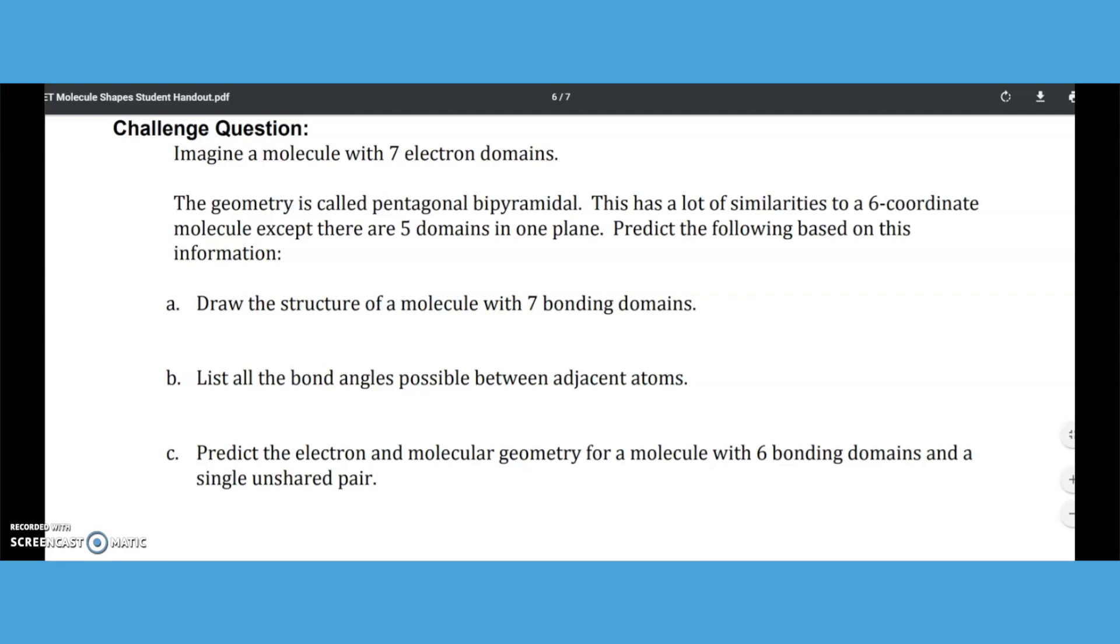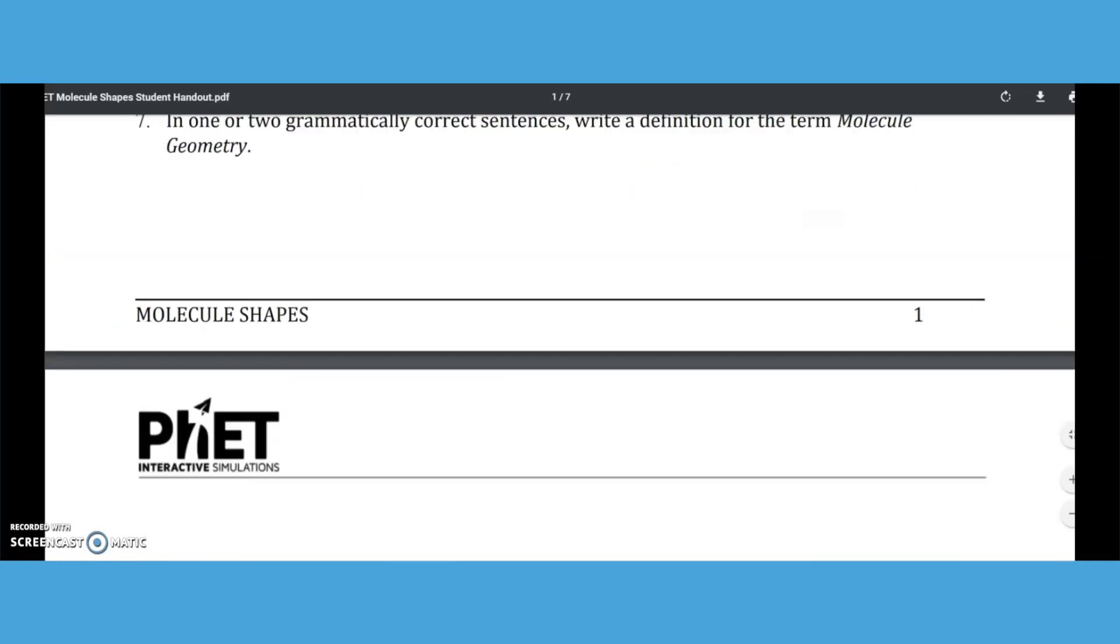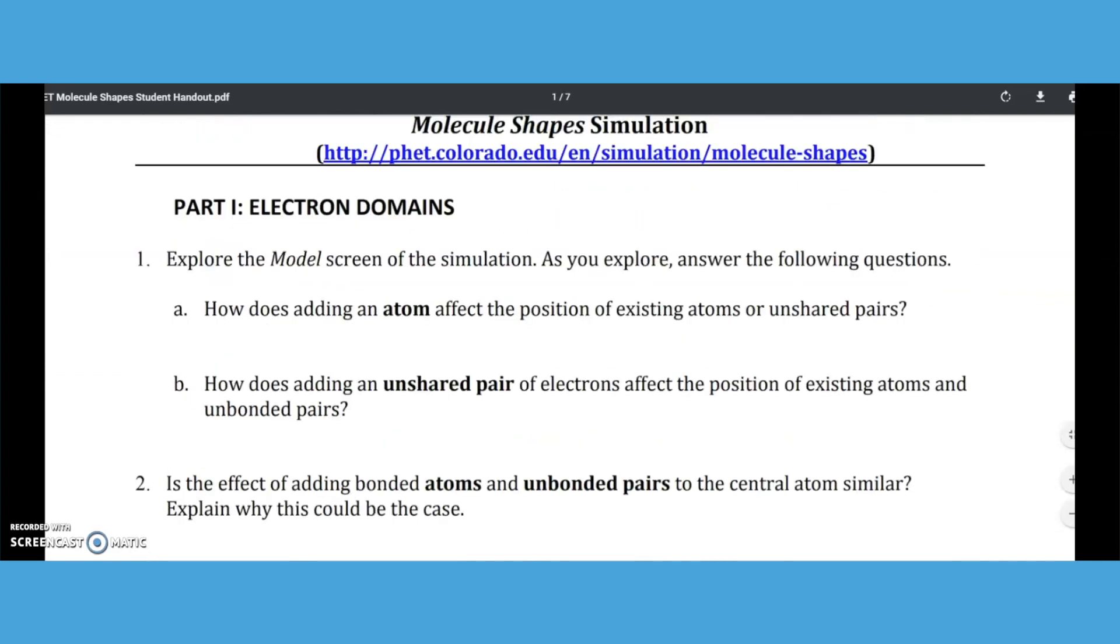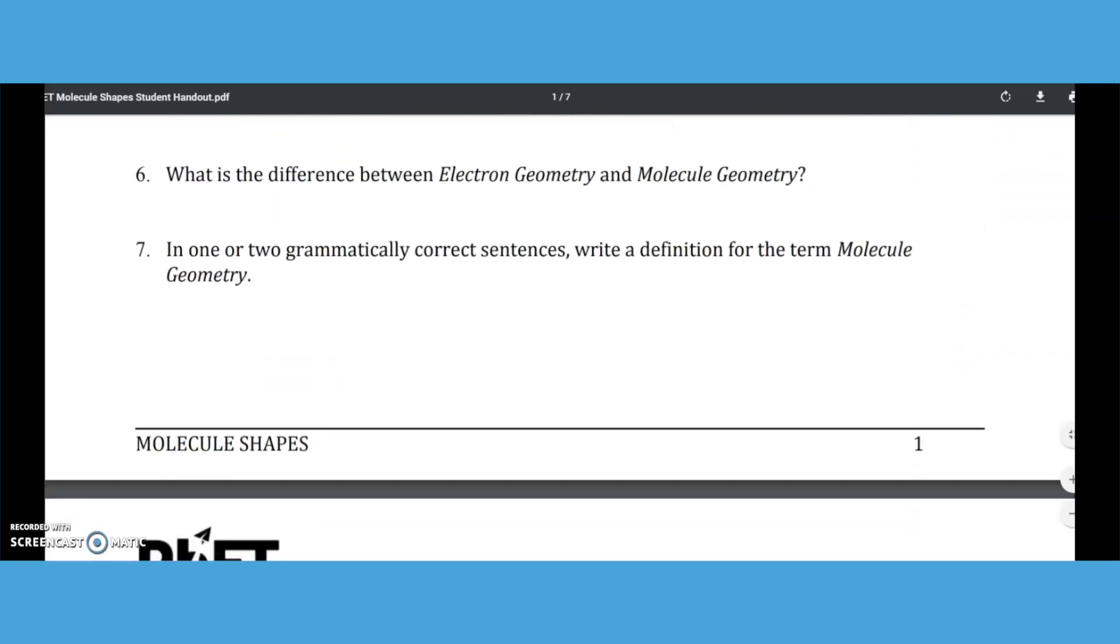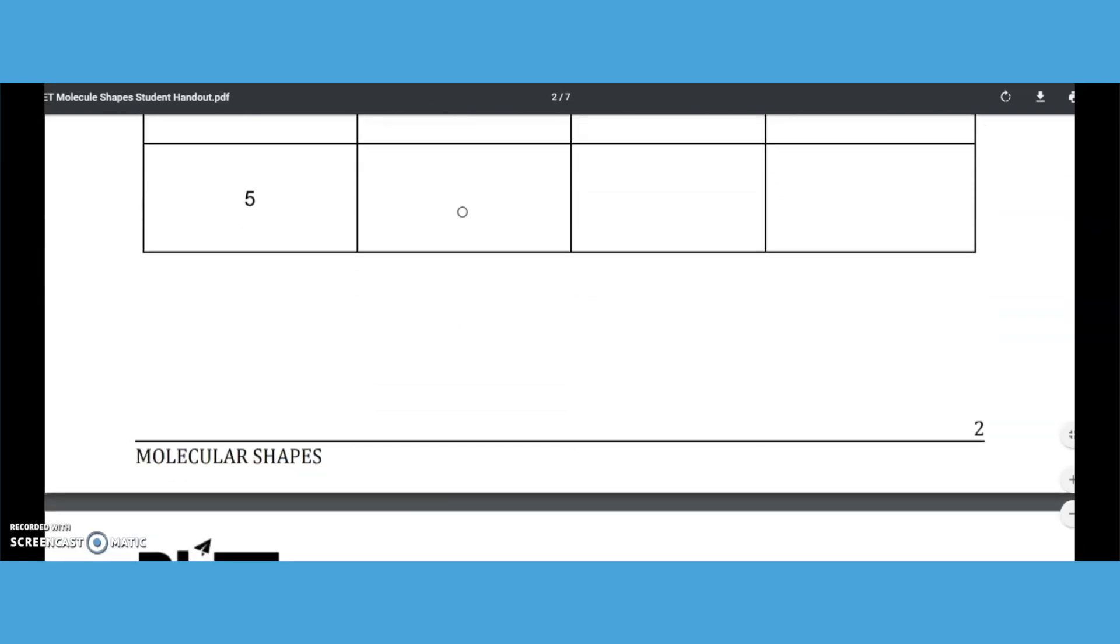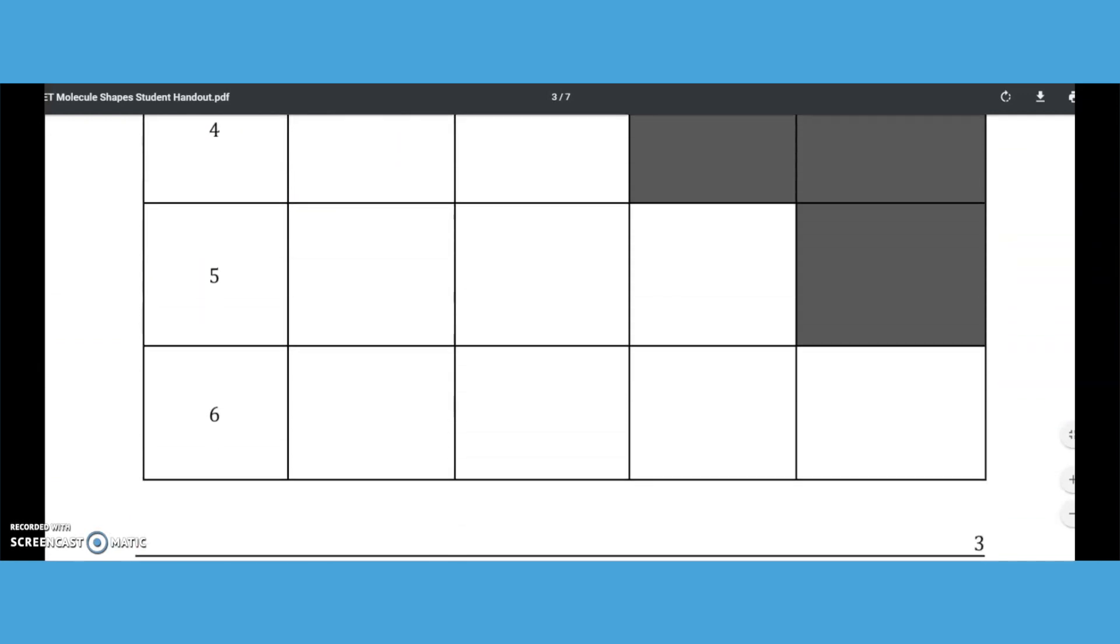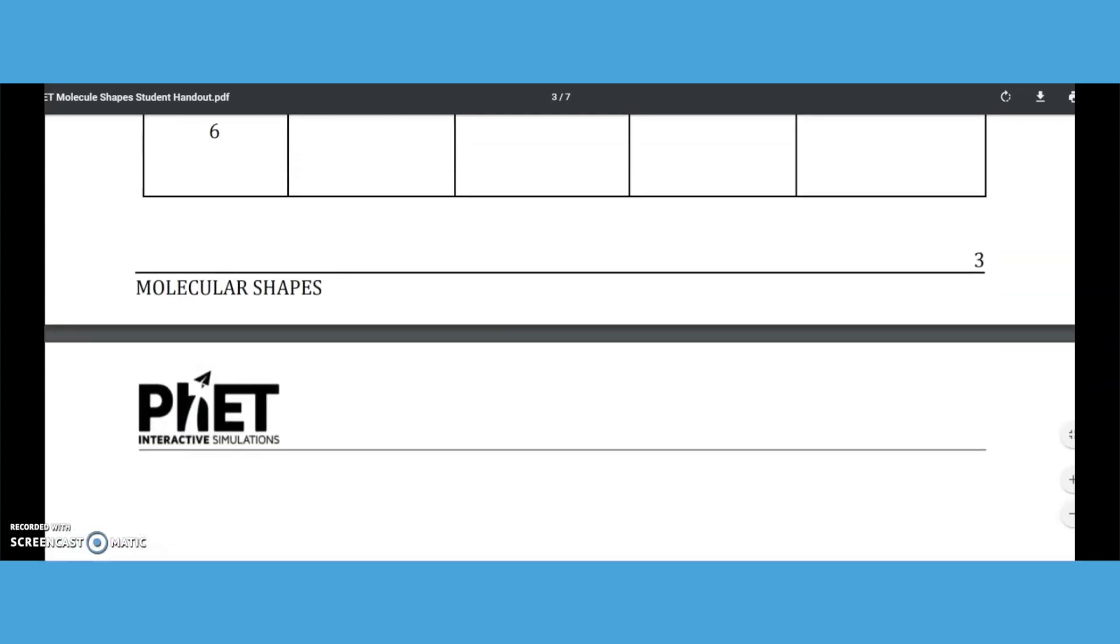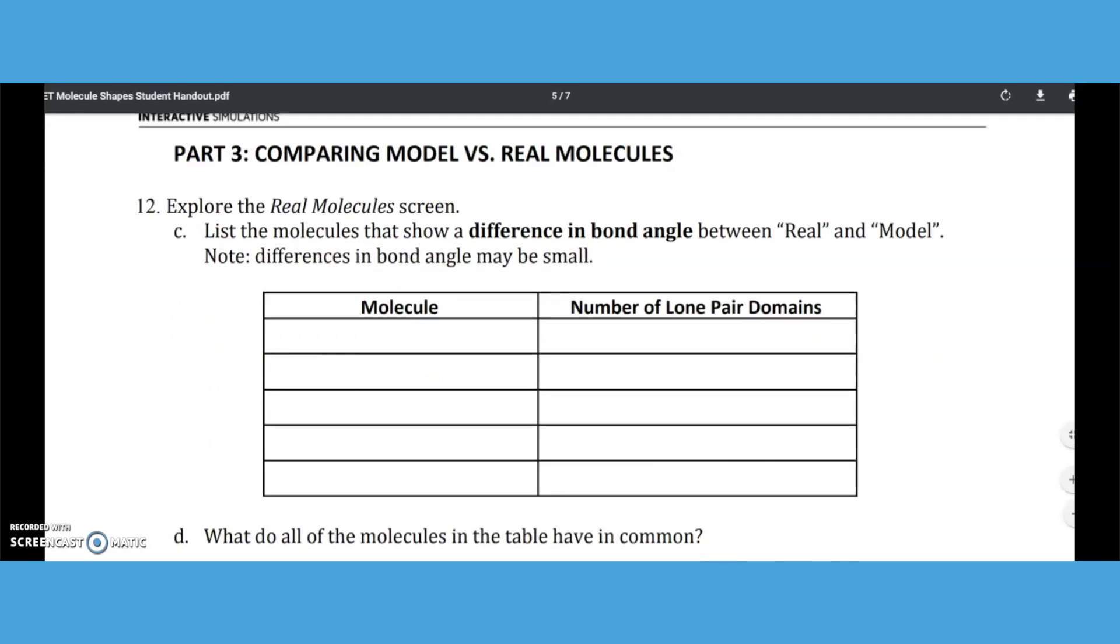How I incorporate this into the classroom setting is: model one, part one, the electron domains. The students can get through that in a day, and model two in a period, in a 50-minute period. Some of your lower-level students or slower students may not complete model two, but that's okay. Let them have time the next day. Then they'll come in and do part three, comparing the model and the real molecules.